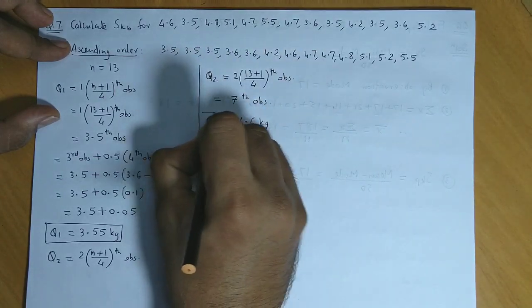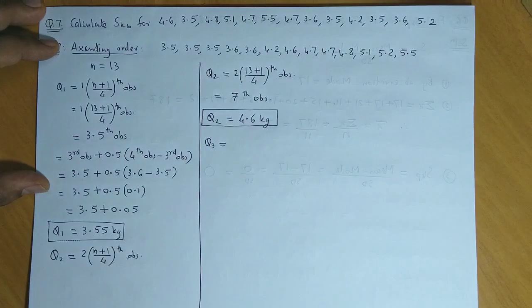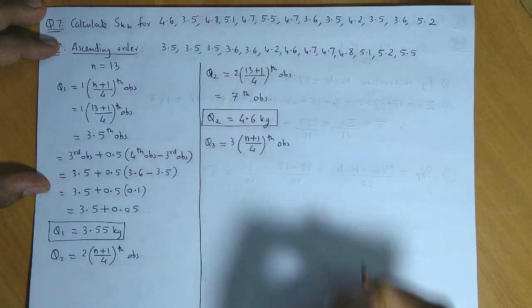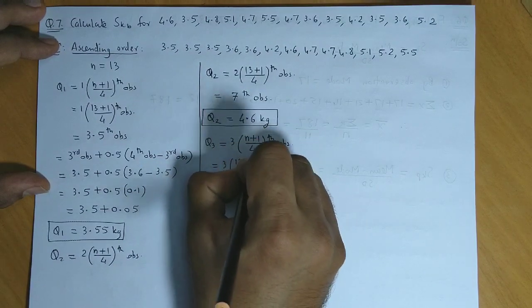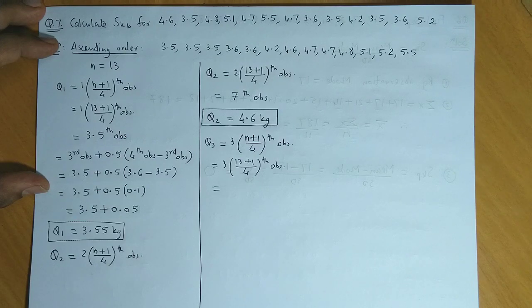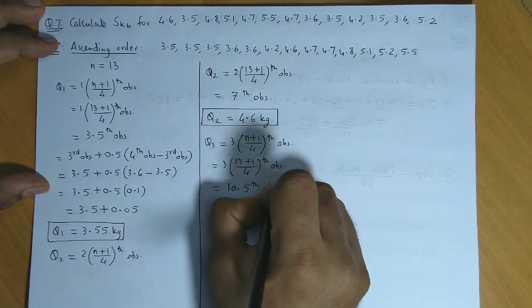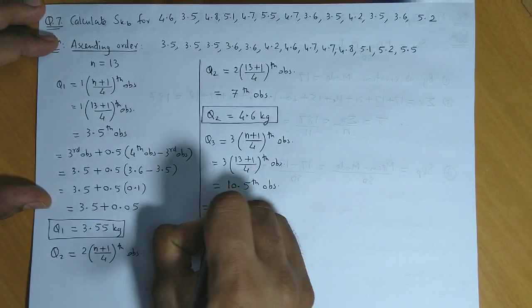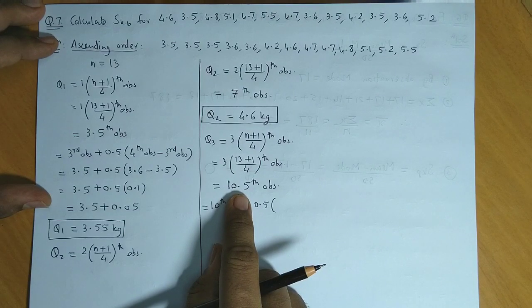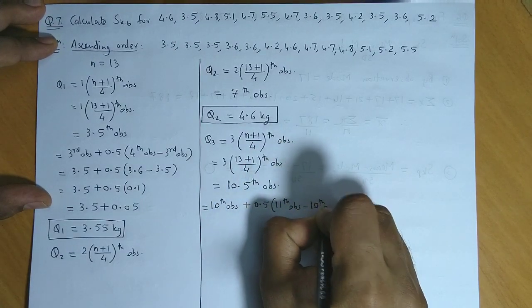And lastly we will find Q3. So Q3 is equal to 3 times n plus 1 upon 4th observation, which is 3 times 13 plus 1 by 4th observation. So this is 3.5 into 3, so 10.5th observation. So the value of 10.5th observation. Now we split as 10th observation plus 0.5. Now 10.5 lies between 10th and 11th observations, so we will write the difference: 11th observation minus the 10th observation.